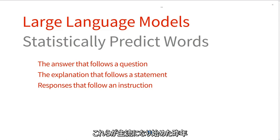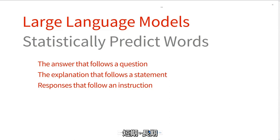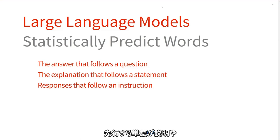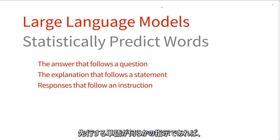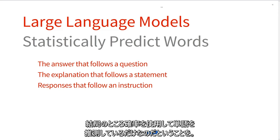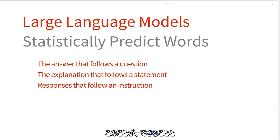But it turns out, as we've discovered in the last year as these things have emerged into the mainstream, that prediction can be incredibly good. It's so good at using both short-range and long-range context to find that next predicted word that the words it predicts often form the answer to a question, or an explanation, or follow instructions. You get this emergent behavior that appears to be intelligence. But it's worth remembering that in the end, it's guessing words using probabilities.